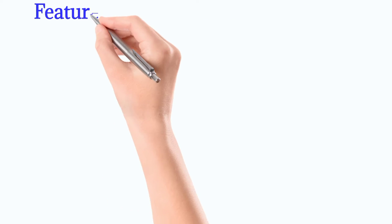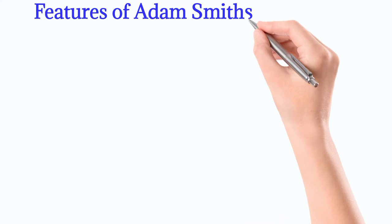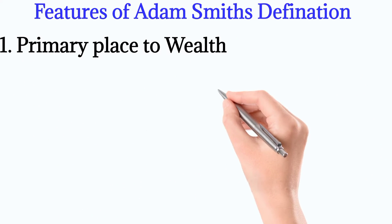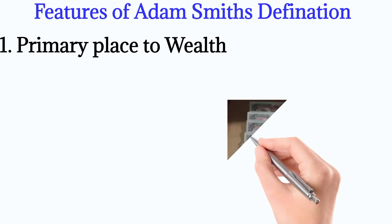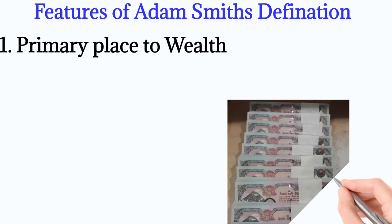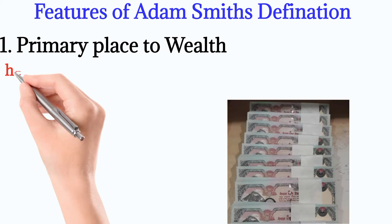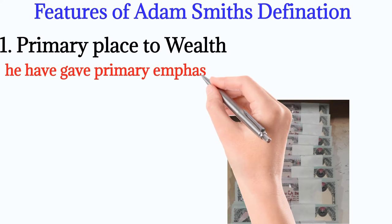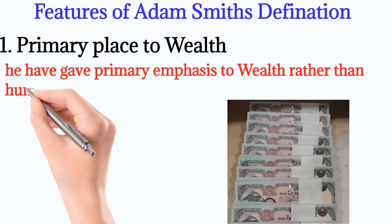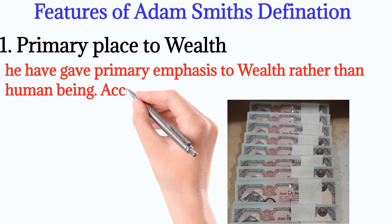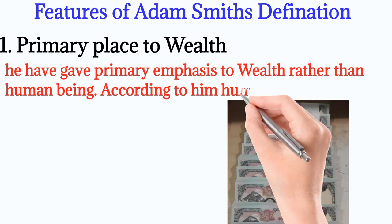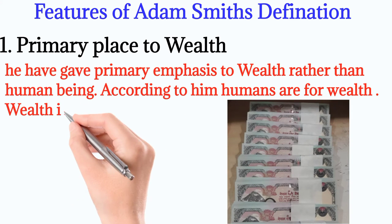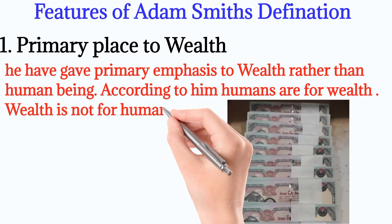Now let us discuss some of the major features of his definition. Number 1: Primary place to wealth. In his definition, he gave primary emphasis to wealth rather than human beings. According to him, humans are for wealth — wealth is not for human beings.